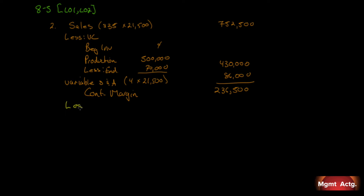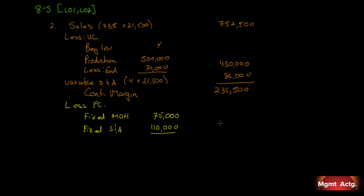Next we subtract fixed costs: fixed manufacturing overhead is $75,000 and fixed selling and administrative is $110,000, totaling $185,000. Subtracting from the contribution margin gives us an operating income of $51,500 under variable costing.